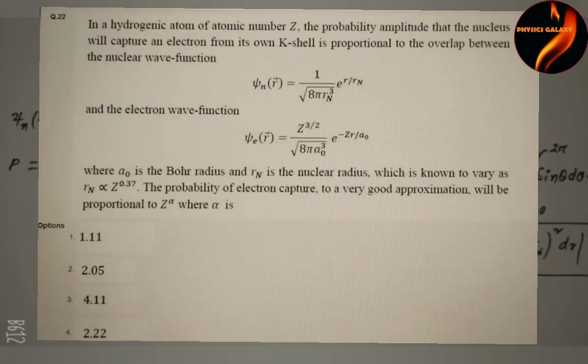Welcome again to our channel Physics Galaxy. This problem is from Earth's IIT 2022 exam. In a hydrogenic atom of atomic number Z, the probability amplitude that the nucleus will capture an electron from its own K-shell is proportional to the overlap between the nuclear wave function and the electron wave function.